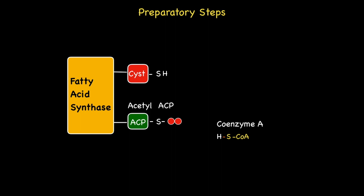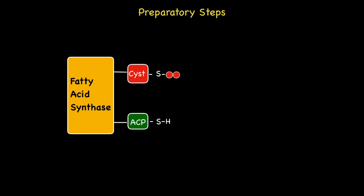Next, these same two carbons are then transferred to the cysteine component of fatty acid synthase, while the hydrogen that was initially attached to the thio functional group within cysteine has migrated to the ACP component, regenerating the thio functional group.